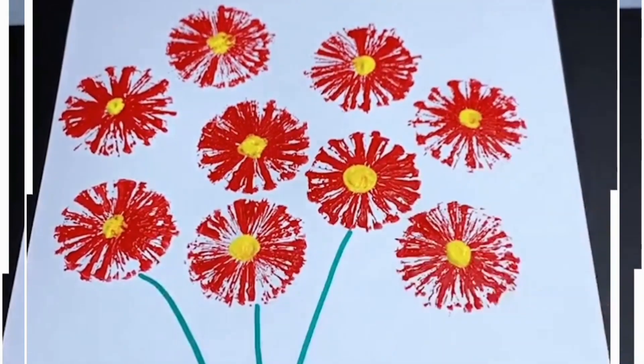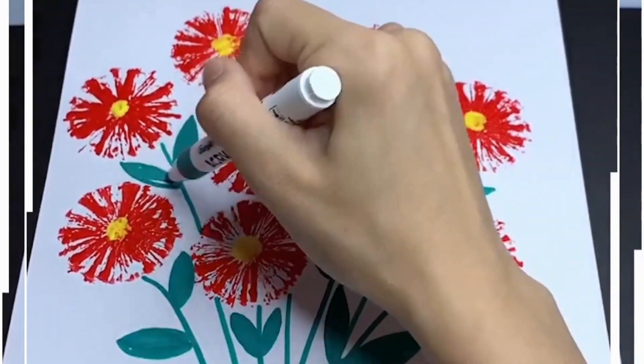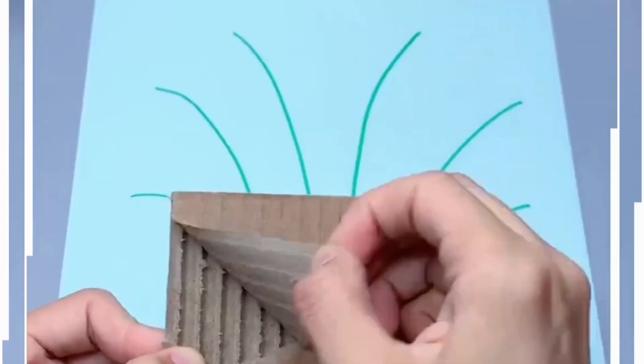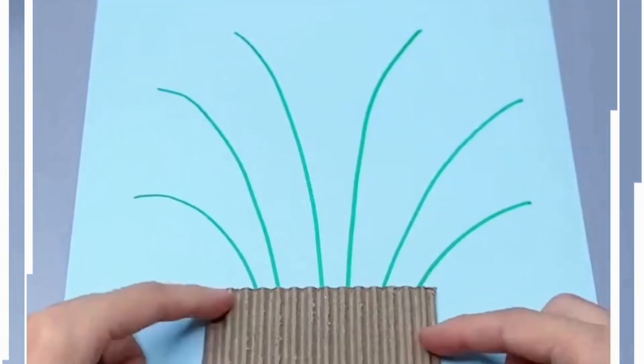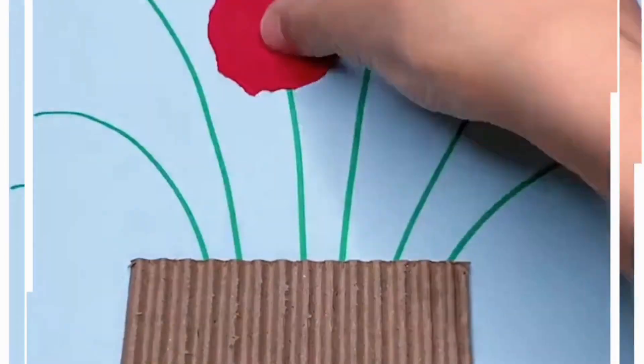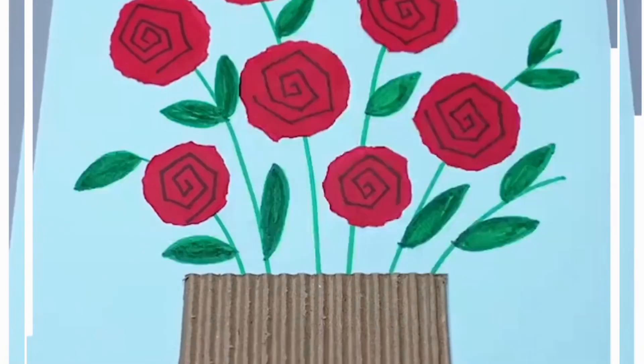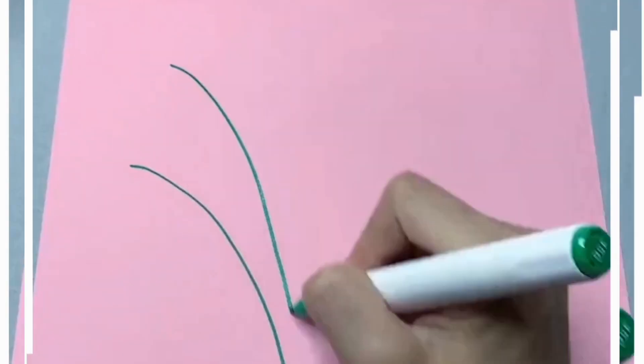Make the flower pot and it's ready. Draw these sticks on the white craft paper. Now tear this cardboard and paste it as a flower pot. Now cut some random circles and paste it on the top of paper. We are drawing the flowers here. Draw leaves and it's ready. Draw these green sticks.